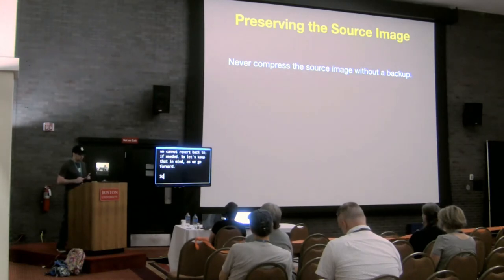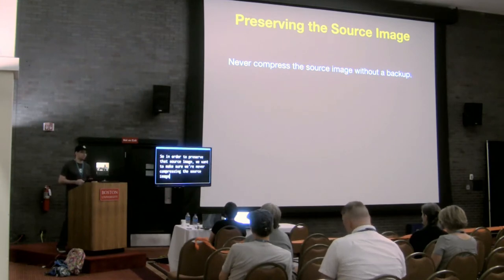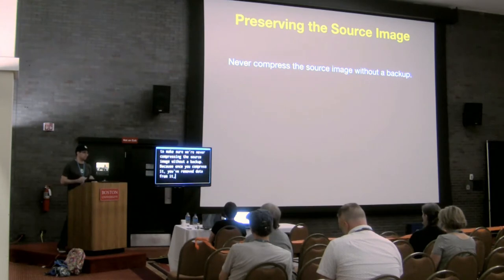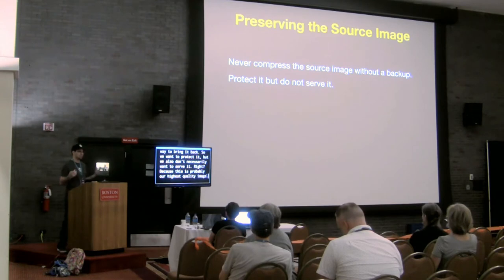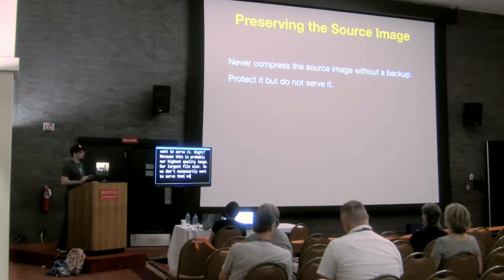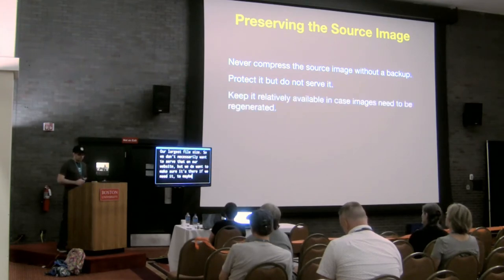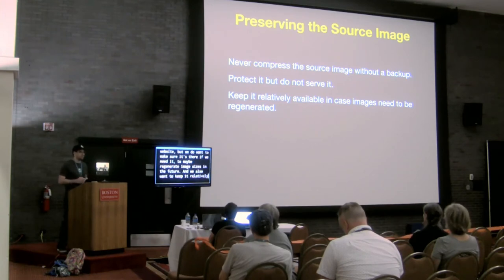In order to preserve that source image, we want to make sure we're never compressing it without a backup. Because once you compress it, you've removed data from it and there's no way to bring it back. We want to protect it, but we also don't necessarily want to serve it — because this is probably our highest quality image and our largest file size. We do want to make sure it's there if we need it to regenerate image sizes in the future, and we also want to keep it relatively available in case we need to go back to it.